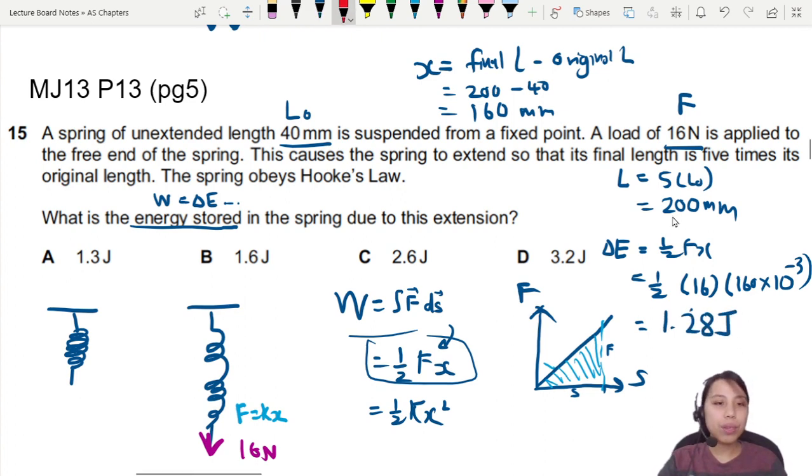That's my answer. So A will be the best choice once I round it off to 2SF. All right. So that's all for this question. I'll see you in the next one when we look at more springs.